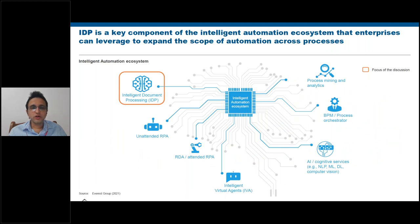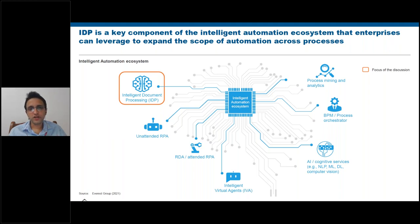Looking at the broader intelligent automation ecosystem, we see rules-based tools like RPA, AI-based tools such as IVA and IDP, and ancillary tools like orchestrators and analytics. For this session, I'll focus on IDP as one of the more highly adopted AI-based tools.